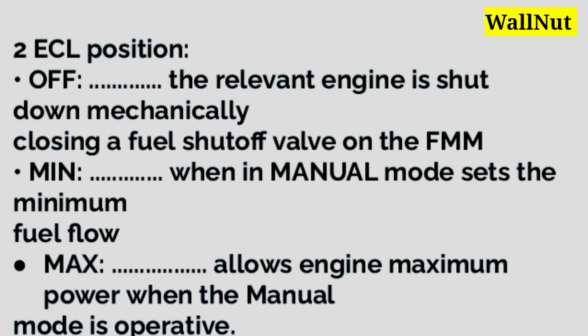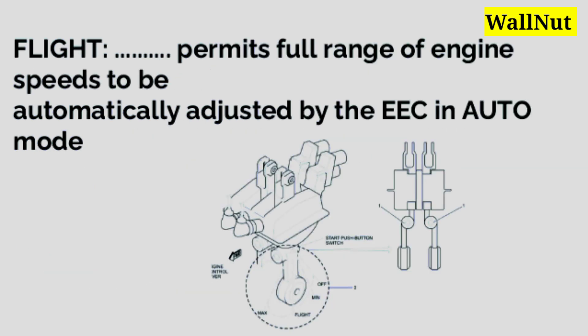The minimum position: when in manual mode, sets the minimum fuel flow. Maximum: allows engine maximum power when manual mode is operative. The fourth position is flight: permits the full range of engine speeds to be automatically adjusted by the EEC in auto mode.